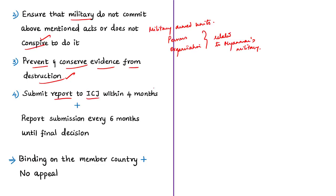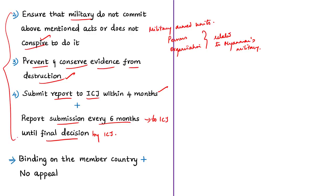The third provisional measure requires Myanmar to take all effective measures to prevent the destruction of evidence related to the allegations and ensure its preservation. The fourth measure requires Myanmar to submit a report to the ICJ within four months detailing all measures taken to comply with the order, and thereafter every six months until a final decision is given. Remember that the ICJ has given its order only regarding provisional measures sought by Gambia — it has not given any final order regarding the allegations of genocide.